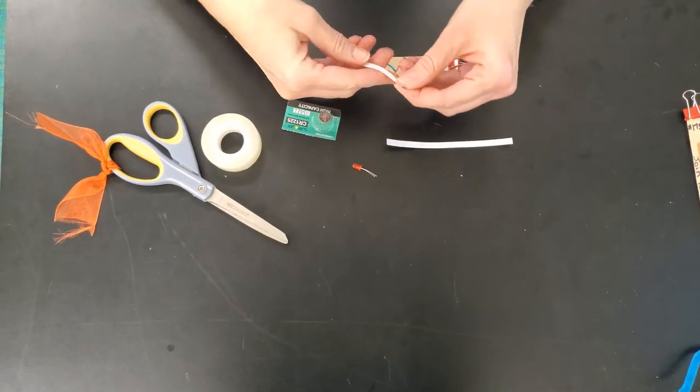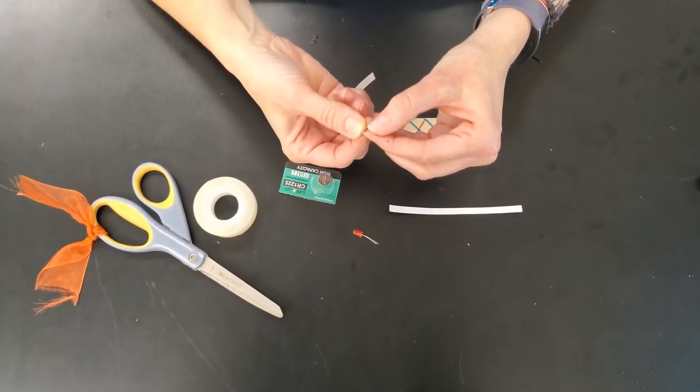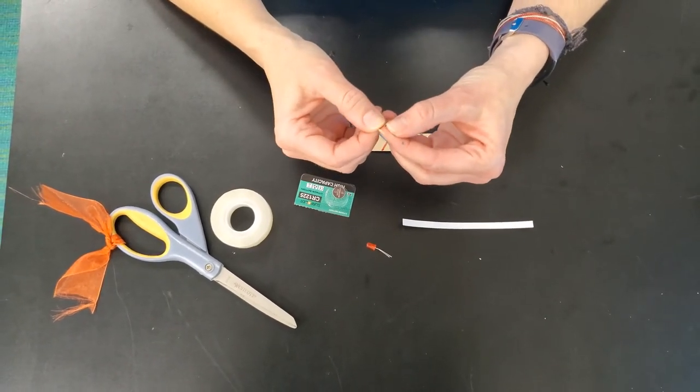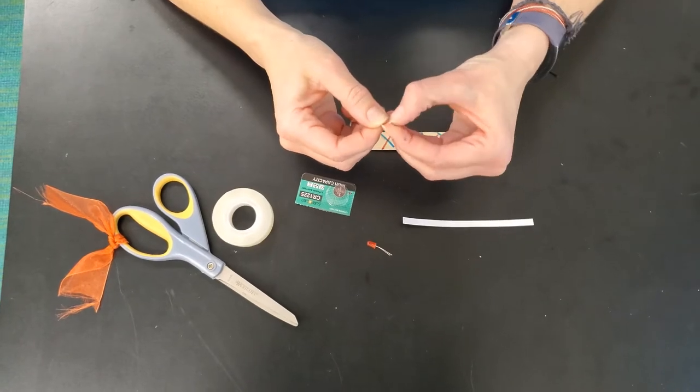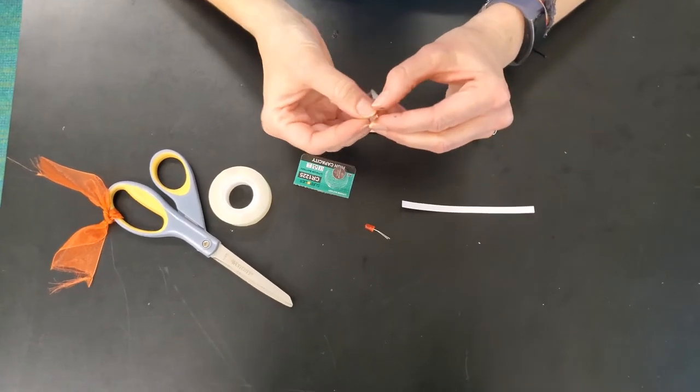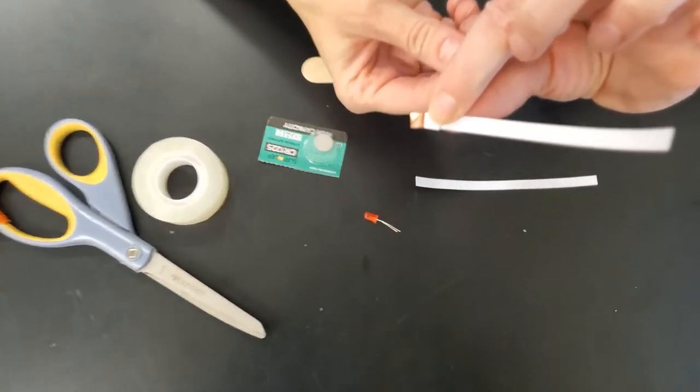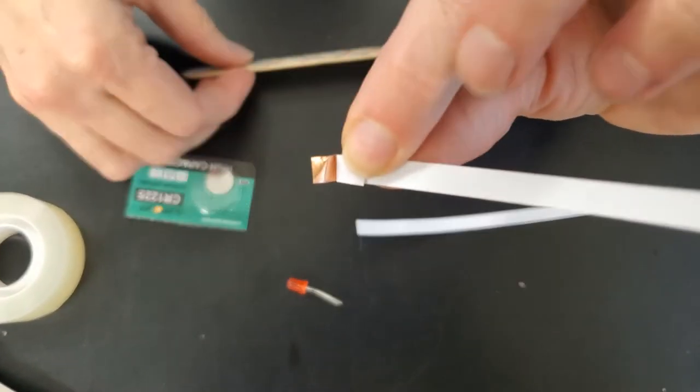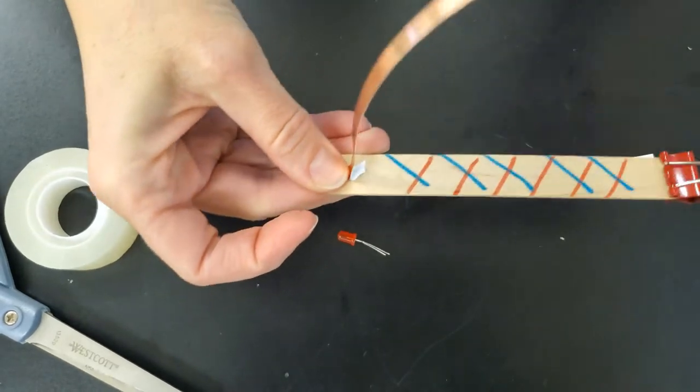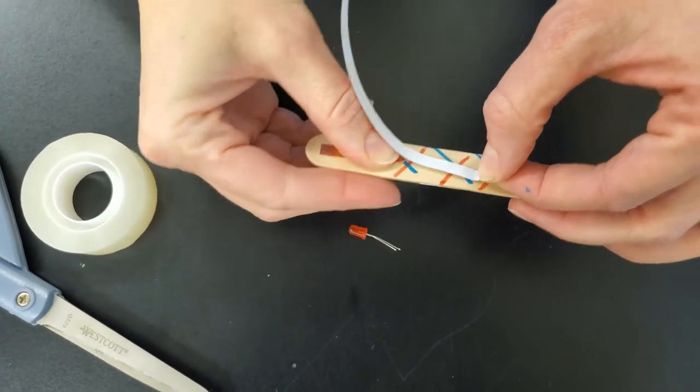The copper tape has an adhesive side and a piece of paper that is protecting it. This is where you might want to get an adult to help you. You want to start peeling that off but only peel off a little bit. Expose just a little bit and then place the part that you have exposed onto your popsicle stick.